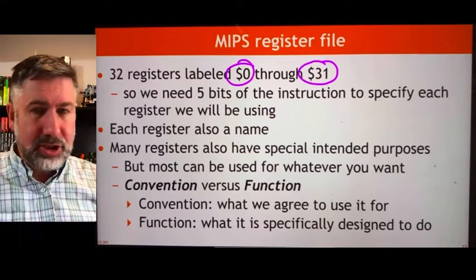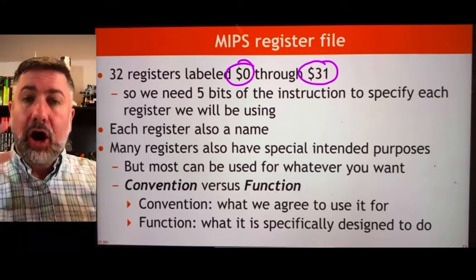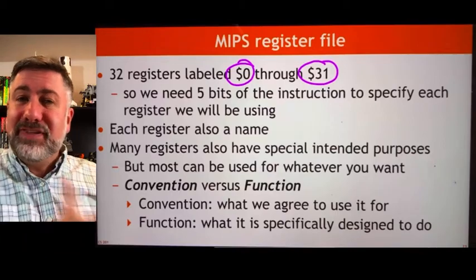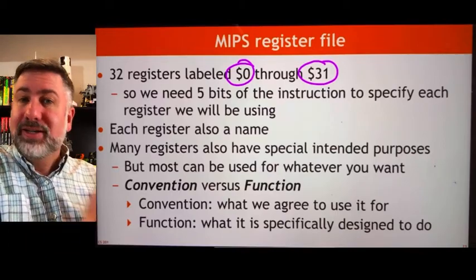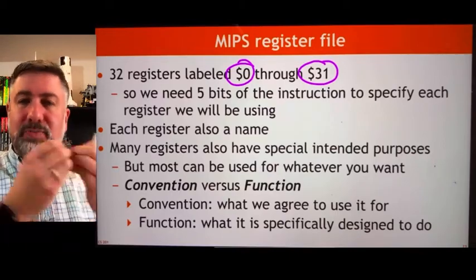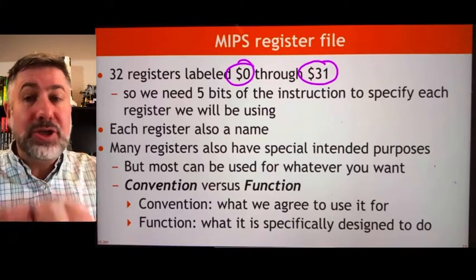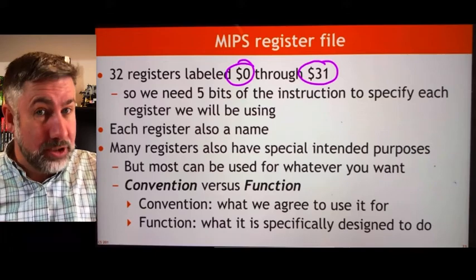If the instruction is 32 bits, already 15 bits worth of that is gone, taken up just by specifying which registers we're interested in.